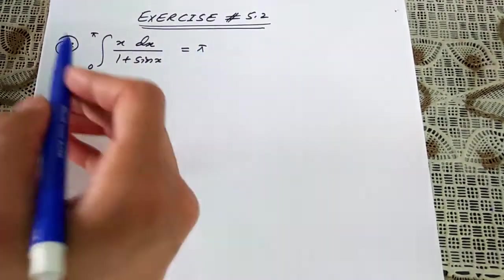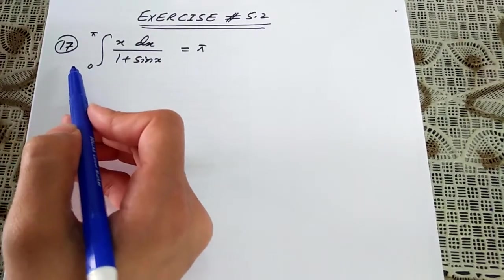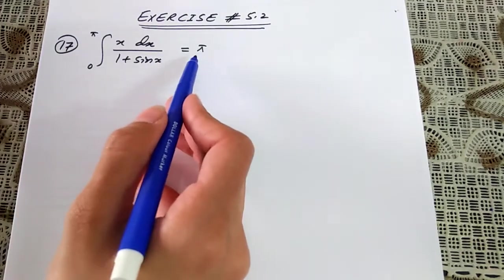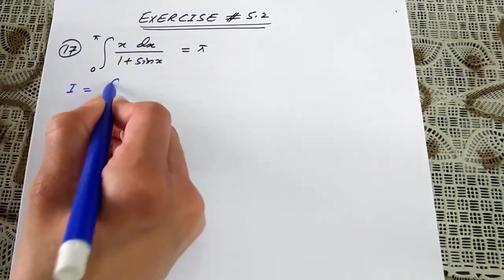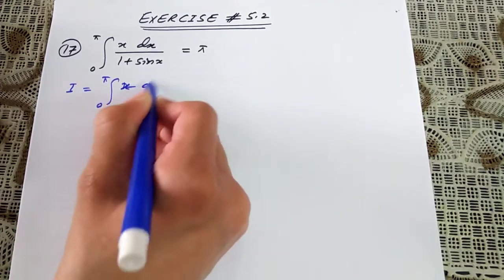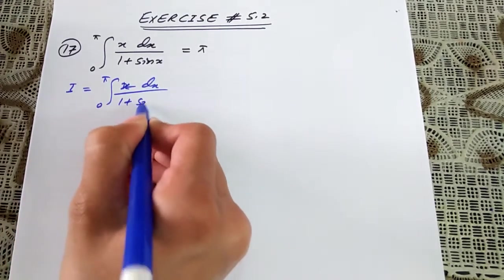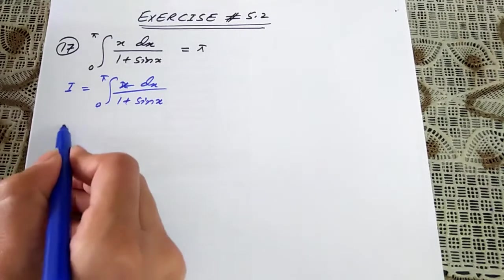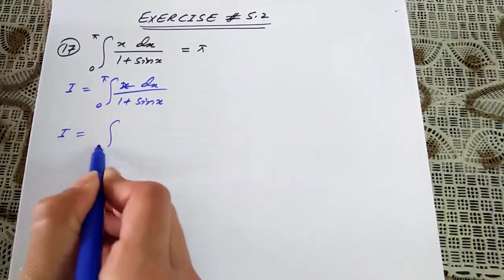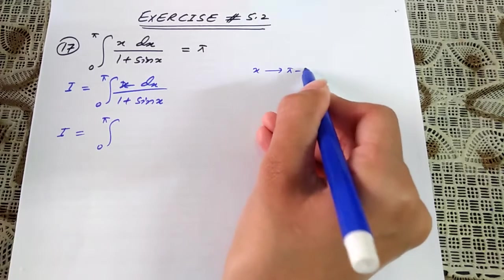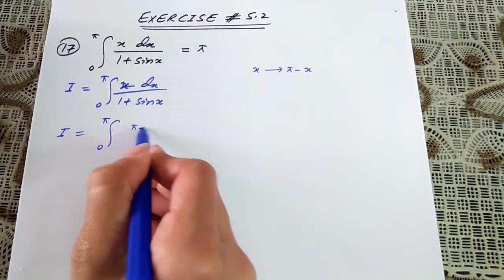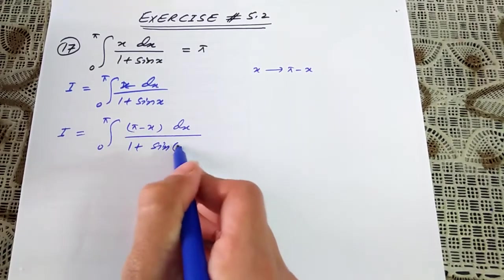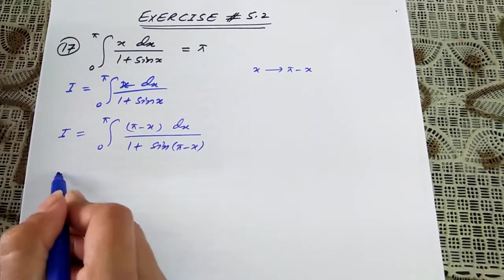Exercise 5.2, question number 17. We need to prove that the integral from 0 to π of x dx over 1 plus sin of x equals π. Consider this integral; let's suppose this equals i. So i equals the integral from 0 to π of x dx over 1 plus sin of x. Using theorem 5.9, I can replace x with π minus x, giving π minus x dx over 1 plus sin of π minus x.